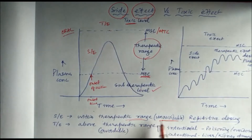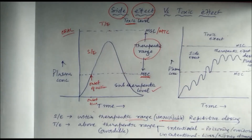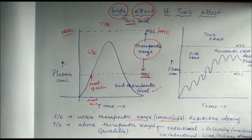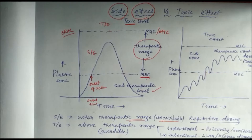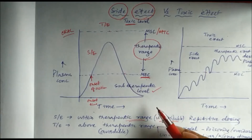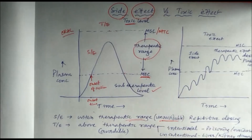In summary: side effects occur within the therapeutic range and are unavoidable; toxic effects occur above the therapeutic range and are avoidable. Toxic effects can be intentional — such as someone taking 10 tablets to attempt suicide, causing poisoning — or unintentional, as in a patient with renal failure or severe hepatic disease where drug metabolism and excretion is not possible, causing drug accumulation and toxicity.